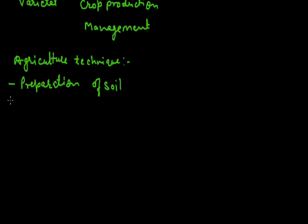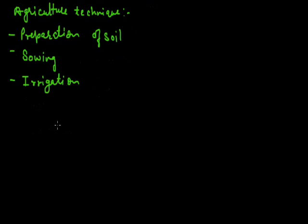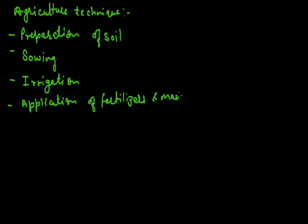The second technique is sowing, in which we sow the seeds in the soil and germinate to produce new plants. The third technique is irrigation, in which we provide water to the crops. Next is the application of fertilizers and manures in the agriculture field. Fertilizers and manures are substances which provide nutrients to the growing crops.